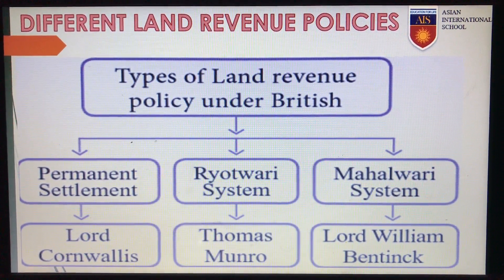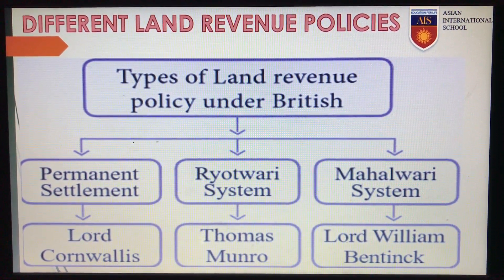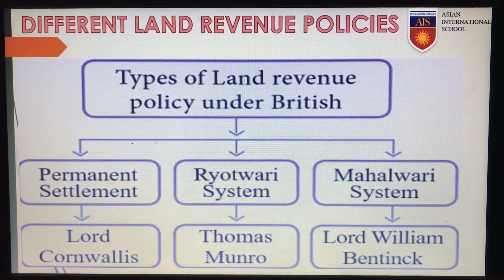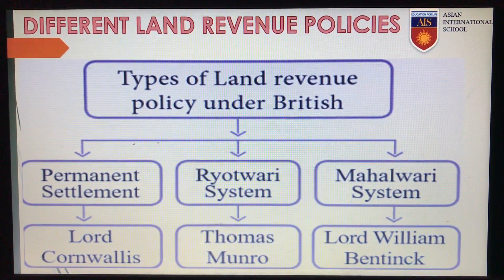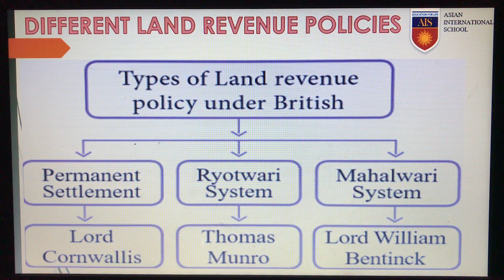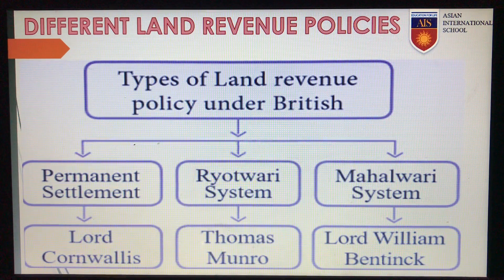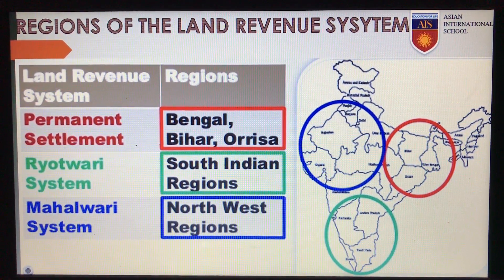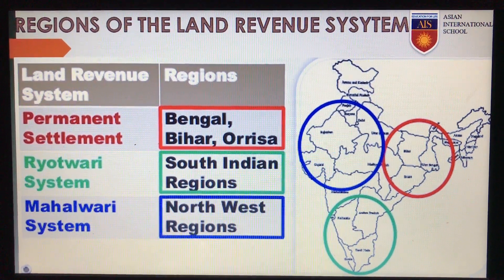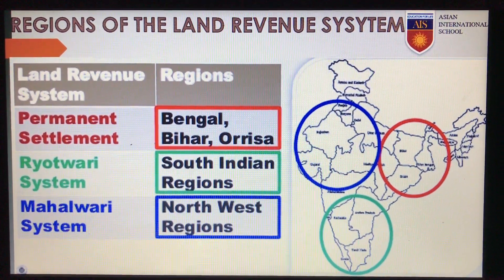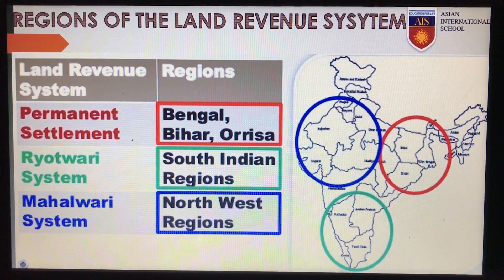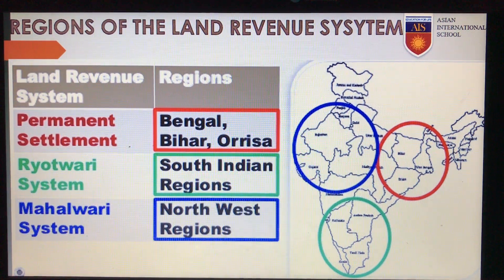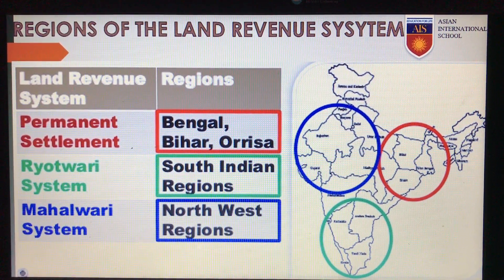After this, there were different land revenue policies introduced by the British government. The few that we would be learning are: the Permanent Settlement, which was introduced by Lord Cornwallis; the Ryotwari system, which was introduced by Sir Thomas Munro; and the Mahalwari system, which was introduced by Lord William Bentinck. The Permanent Settlement was introduced in Bengal, Bihar and Orissa; the Ryotwari system was introduced in the Madras Presidency and later extended to the Bombay Presidency; and the Mahalwari system was introduced in the northwestern region of the Indian subcontinent.